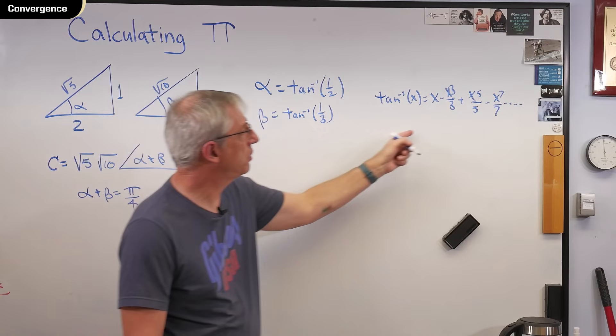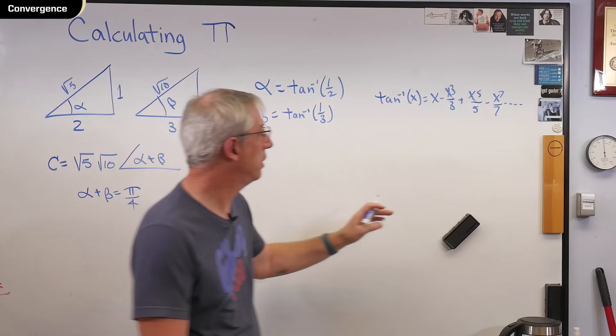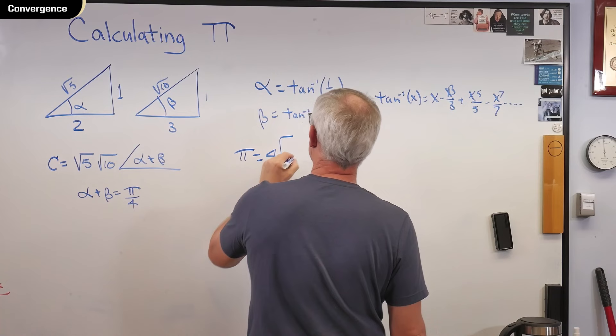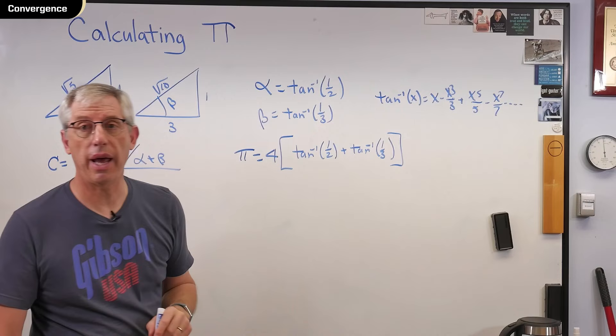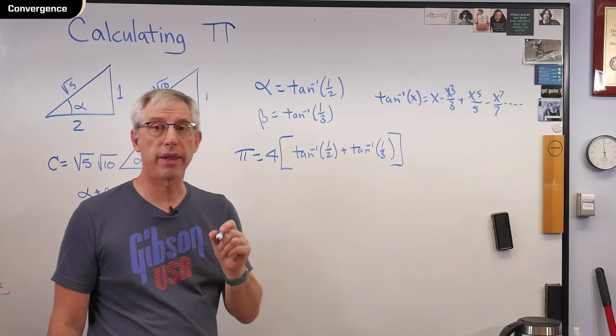Oh, look, they do. So what we're going to do now is we're going to say pi is 4 times inverse tangent of a half plus inverse tangent of a third. Write those out as McLaurin series here, and you've got an algorithm for calculating pi that has all the features we want.